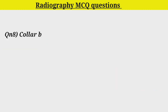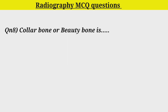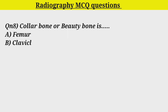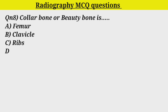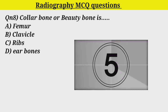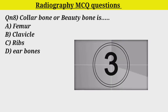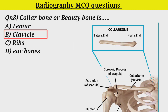The correct answer for Q7 is Towne's view. Q8. Collar bone or beauty bone is: Option A. Femur. Option B. Clavicle. Option C. Ribs. Option D. Ear bones. Correct answer is Option B. Clavicle.